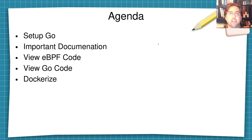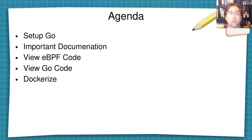The agenda today is that I'm going to show you how to set up Go from a green machine — a machine that isn't ready to do this yet. I will show you the important documentation on doing eBPF with Go. I've then got a sample application where I will go through some of the eBPF code and the Go code. After all of that, we can Dockerize this application.